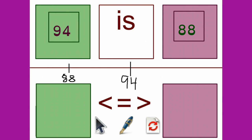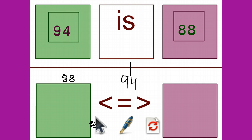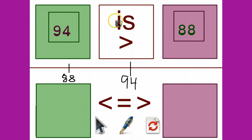In our sentence here, the 94 comes first, so I need to say 94 is greater than 88. Which of these symbols stands for greater than? If you chose this one, you are correct. The big end always faces the bigger number on inequalities. So 94 is greater than 88.